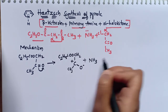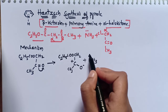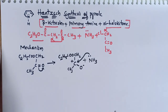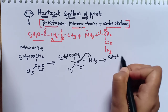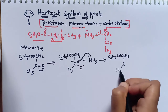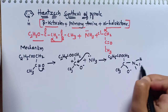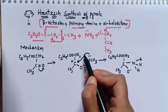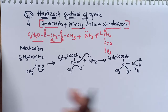NH3 now acts as a nucleophile. The lone pair of electrons on nitrogen attacks the positively charged carbon — this is a nucleophilic attack on the carbonyl carbon. The lone pair moves toward the carbon to form a new bond. The resulting structure is: C2H5-COO-CH2-C(NH3)-CH3 with oxygen carrying a negative charge.